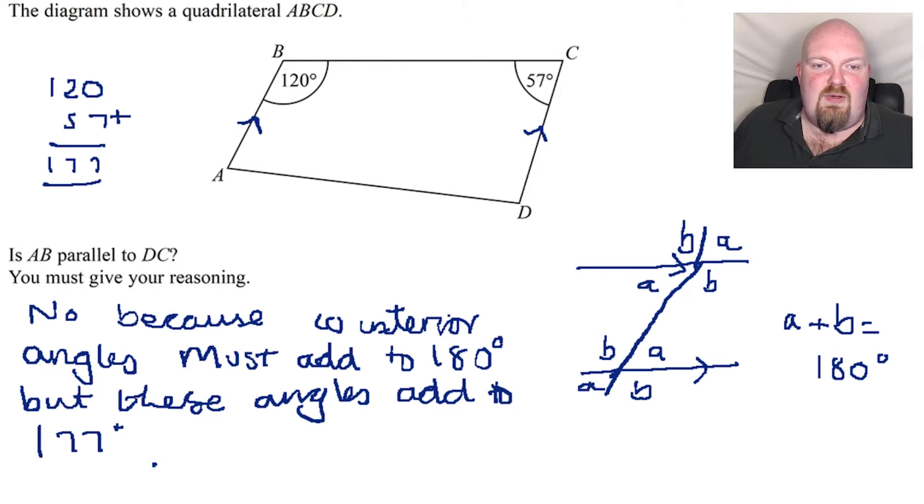The key words we're looking for are co-interior, and it's important even though the question doesn't explicitly ask for it, it's always worth stating that it should be 180, but in this situation it's 177. So that therefore is the proof that it is not.